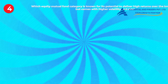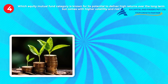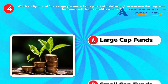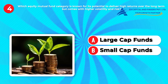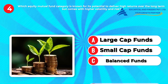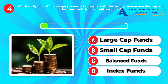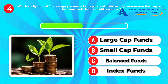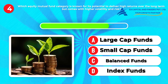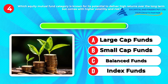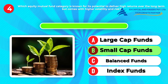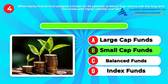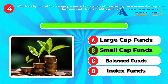Question four: Which equity mutual fund category is known for its potential to deliver high returns over the long term but comes with higher volatility and risk? A, large cap funds. B, small cap funds. C, balanced funds. D, index funds. Answer: B, small cap funds. Investing in smaller companies can offer significant growth opportunities, but it's essential to be prepared for higher fluctuations in value.